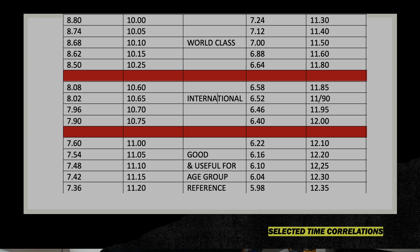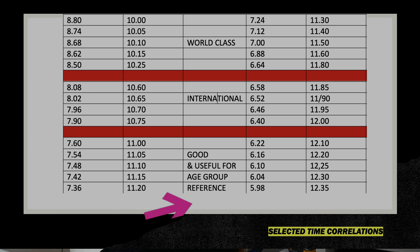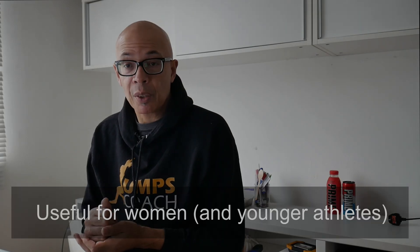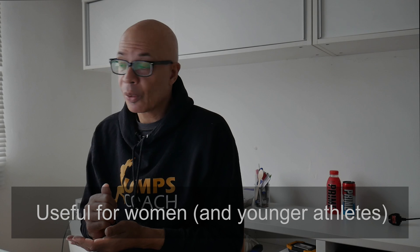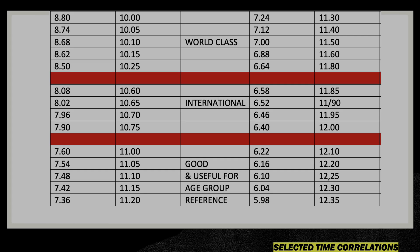I've termed world class as performances between 10.25 and 10 dead for the 100 metres, with a range of jumps between 8 metres 50 and 8 metres 80. Looking at the lower end of the spectrum — times I've said are good and useful for age group reference — 100-metre times range from 11.2 to 11 dead with jumps from 7 metres 36 to 7 metres 60, and from 12.35 to 12.10 for the 100 metres with jumps between 5 metres 98 and 6 metres 22. This gives a good idea of what 100-metre time relates to in terms of jump distance.